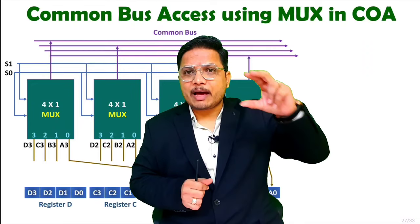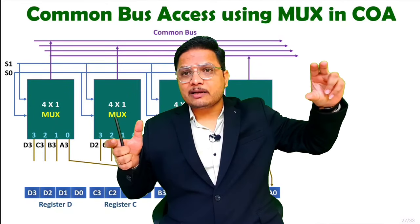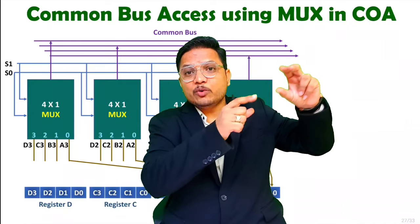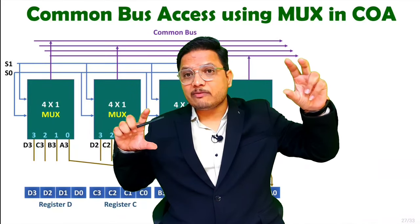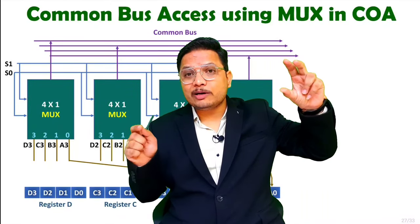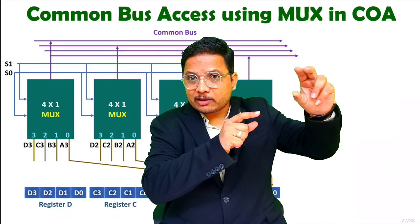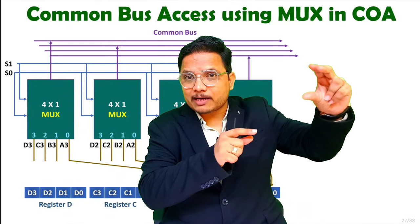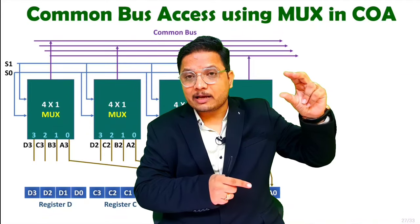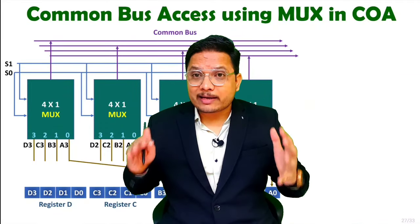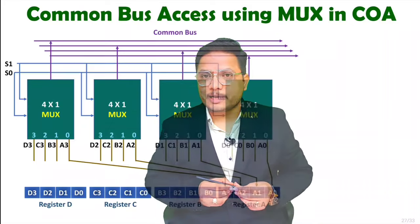Here, let us say we have a common bus on which one register wants to transfer data into another register. First of all, one register will have to load data onto the common bus. After that only, from that bus, another register can take data. How exactly do all those things happen? Let us try to understand that.